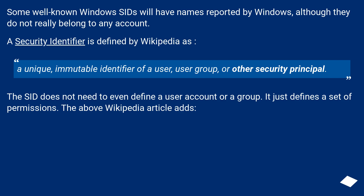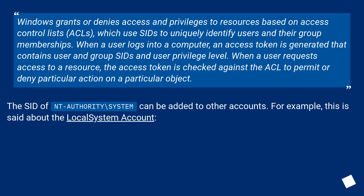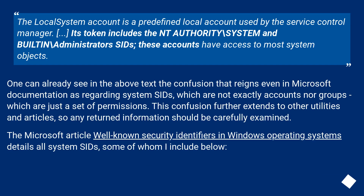The Wikipedia article adds: Windows grants or denies access and privileges to resources based on access control lists (ACLs), which use SIDs to uniquely identify users and their group memberships. When a user logs into a computer, an access token is generated that contains user and group SIDs and user privilege level. When a user requests access to a resource, the access token is checked against the ACL to permit or deny particular actions. The SID of NT Authority\system can be added to other accounts — for example, this is said about the local system account: its token includes the NT Authority\system and Built-in\Administrator SIDs, and these accounts have access to most system objects.